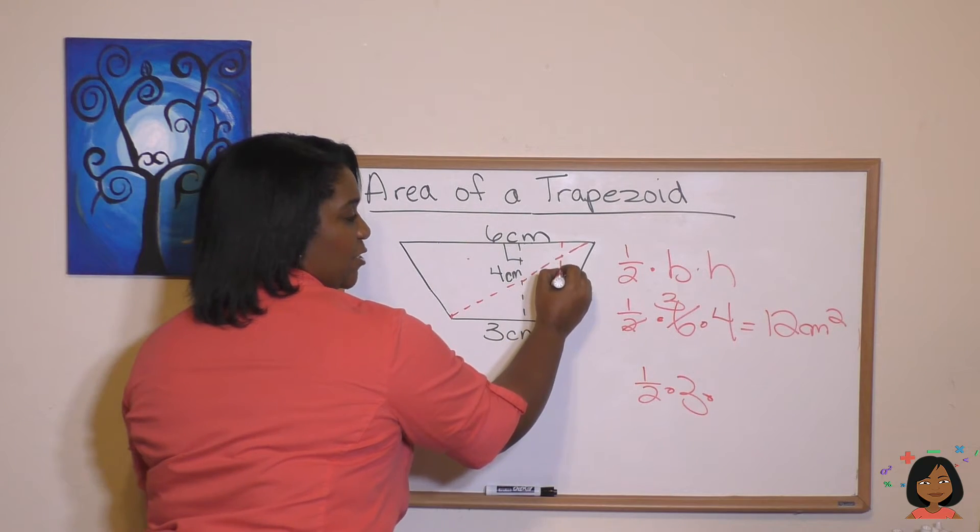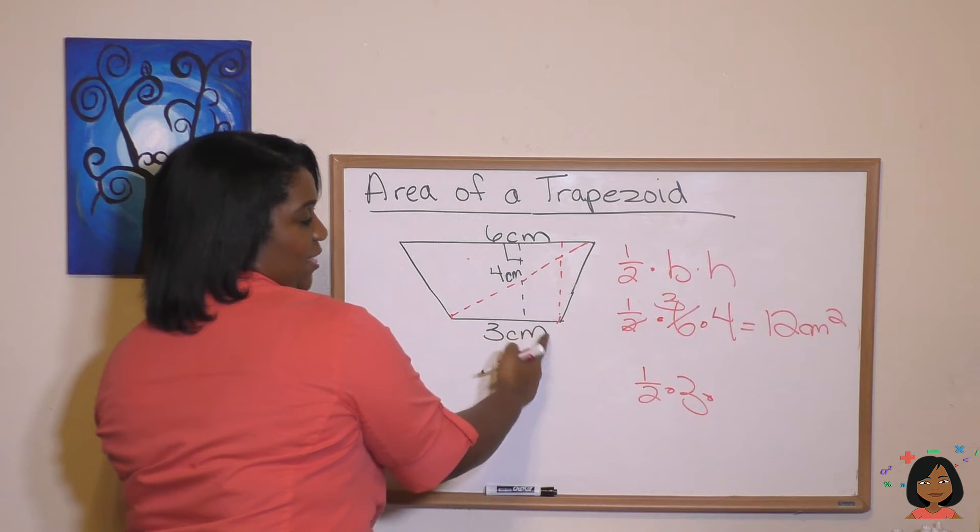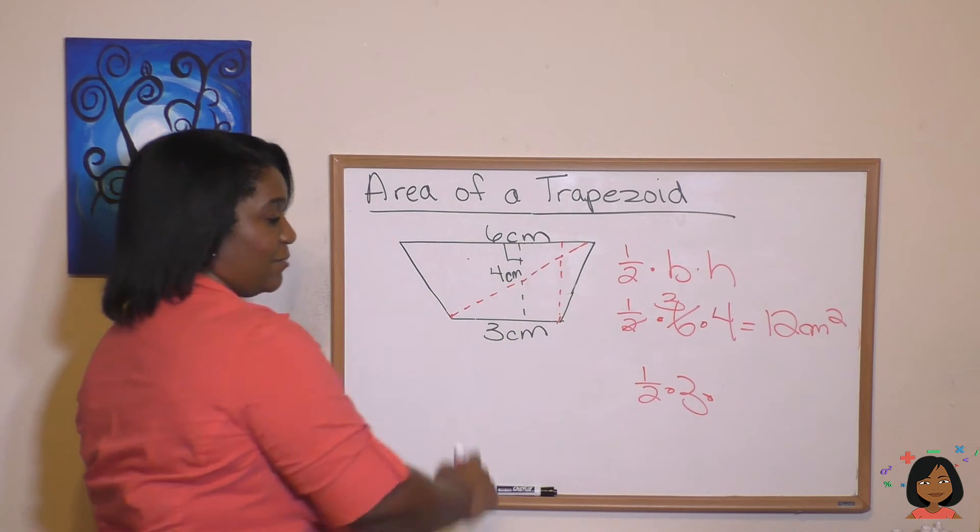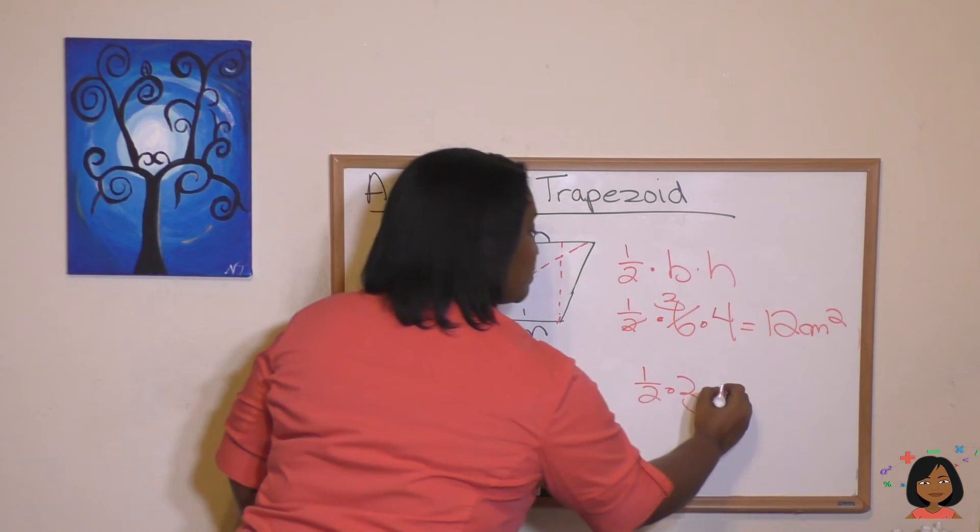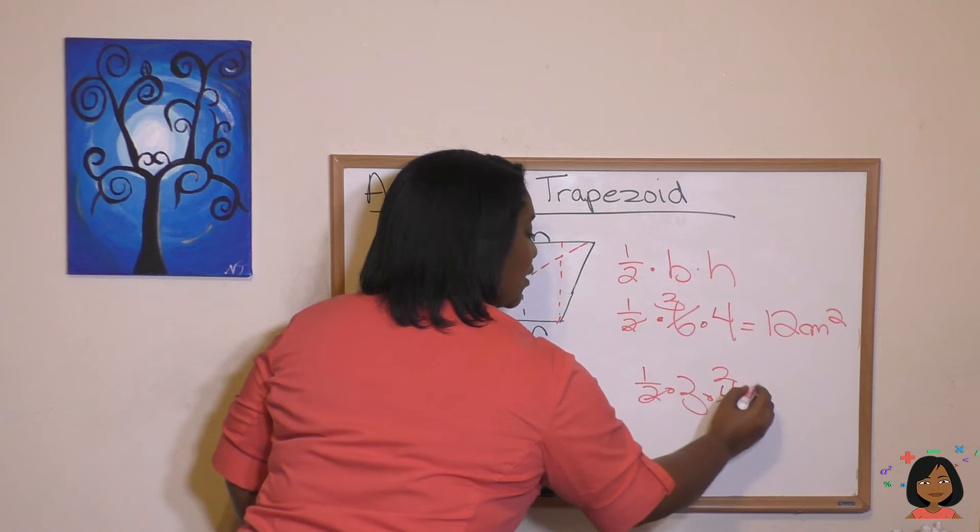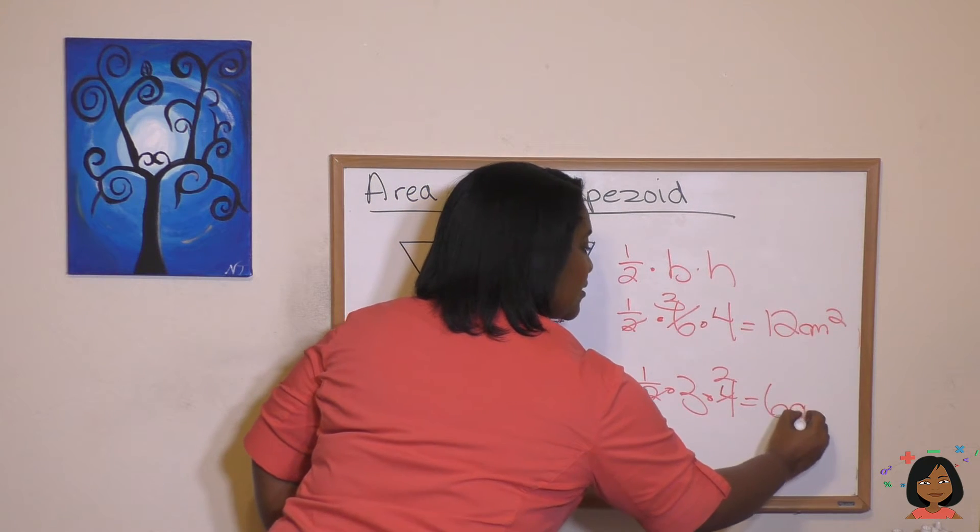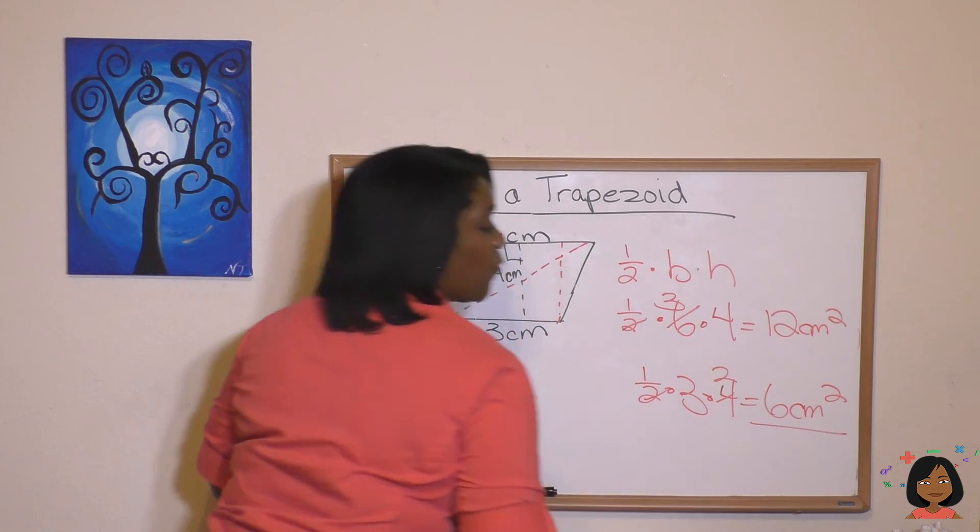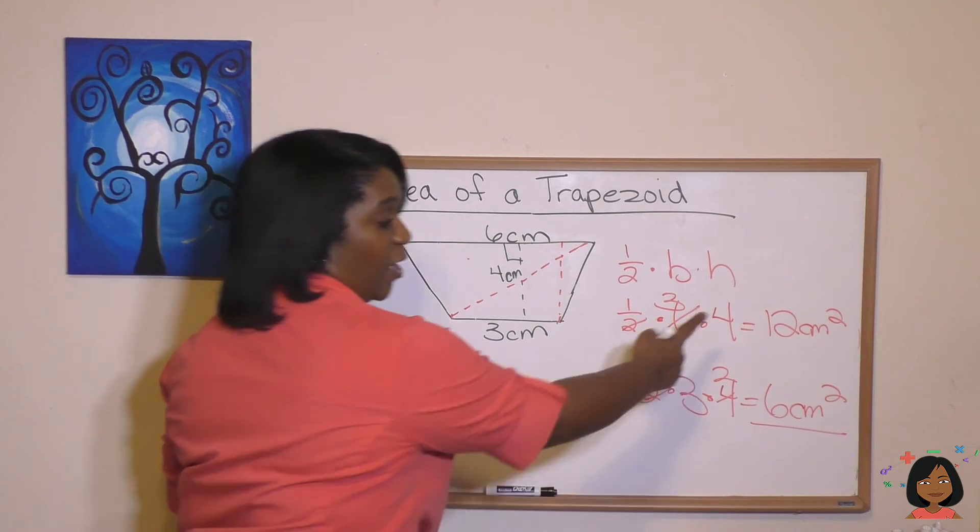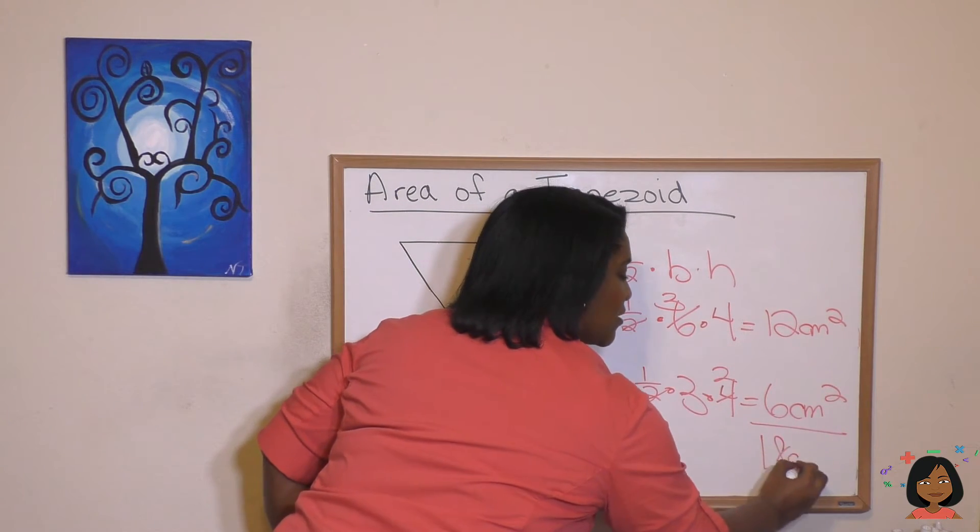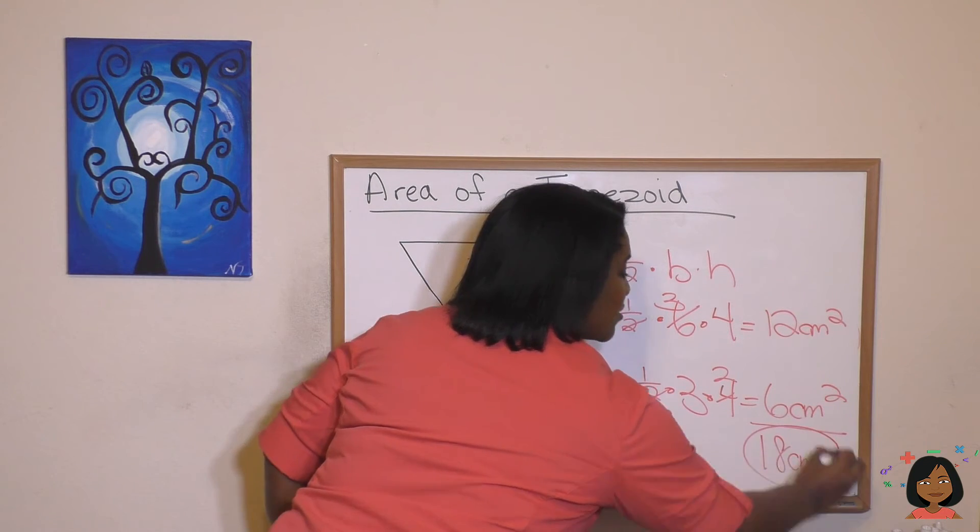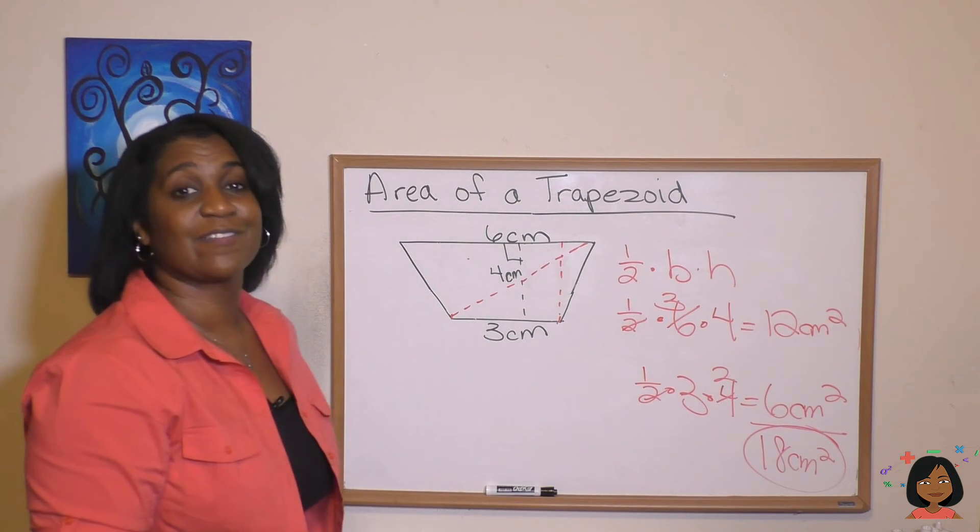And our height is still going to be a four. But I'm just going to shift it over here so it's easy for you to see that it's the height of this triangle. So it's times four. And let's do some canceling. We are left with six centimeters squared. So if we add them together, we get 12 plus six. And our answer is 18 centimeters squared for our area of the trapezoid.